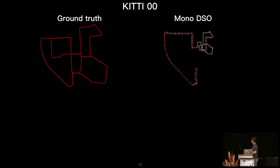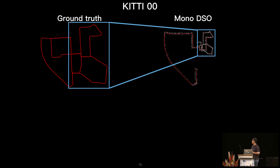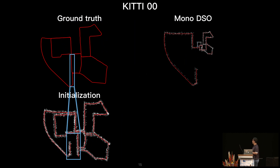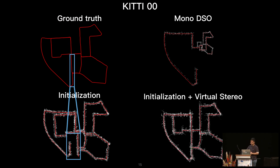Together with the temporal photometric error terms, we have the total photometric error. We use Gauss-Newton method to optimize the error function and obtain refined sparse depth estimates and keyframe poses. On another KITTI sequence, monocular DSO delivers locally good 3D reconstruction, but suffers large scale drift over long-term running. After using initialization from the left disparity map, scale drift is largely eliminated. After adding the virtual stereo term, accuracy improves greatly — basically, there is no visible difference between the estimated trajectory from DVSO and the ground truth.